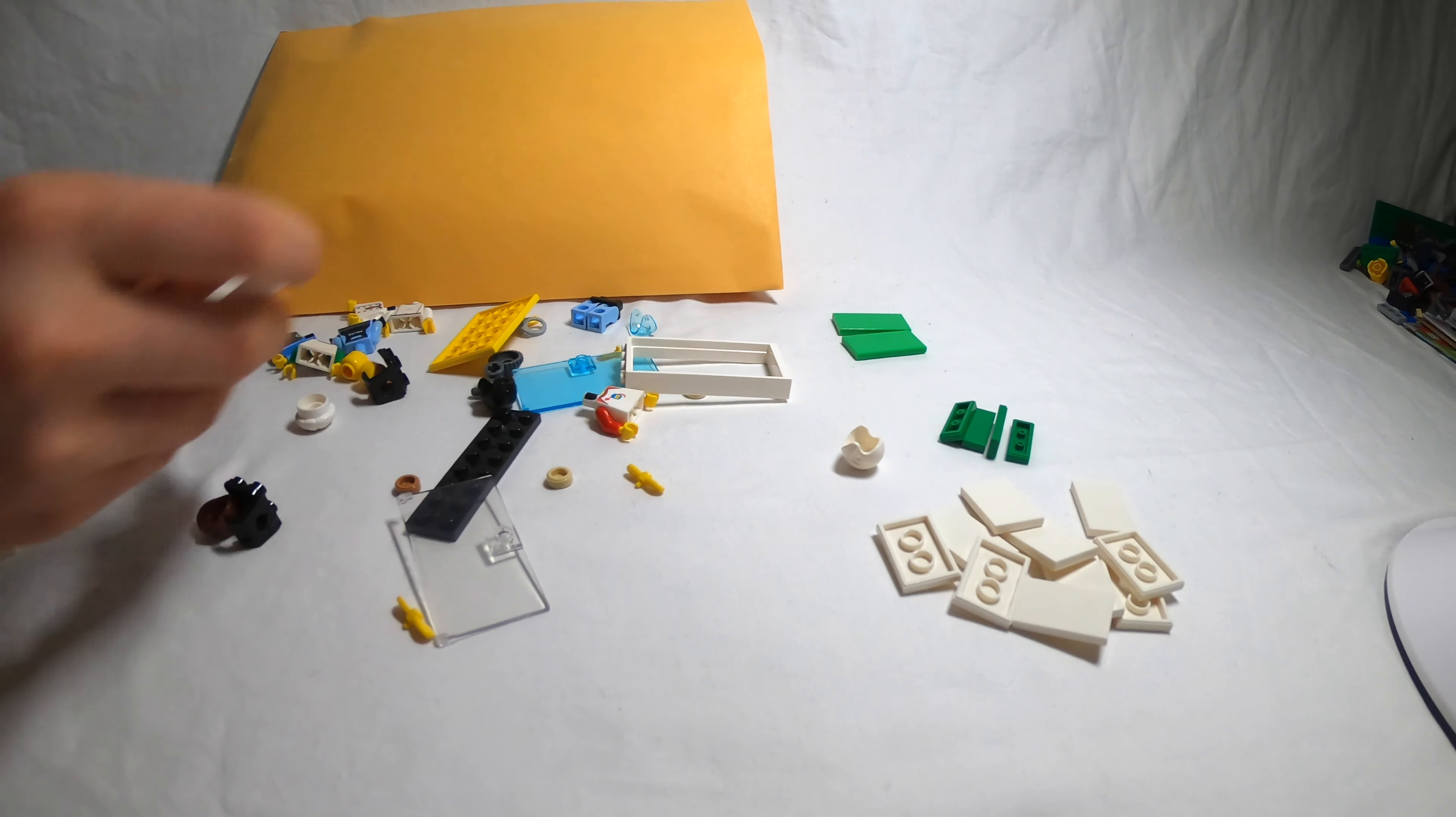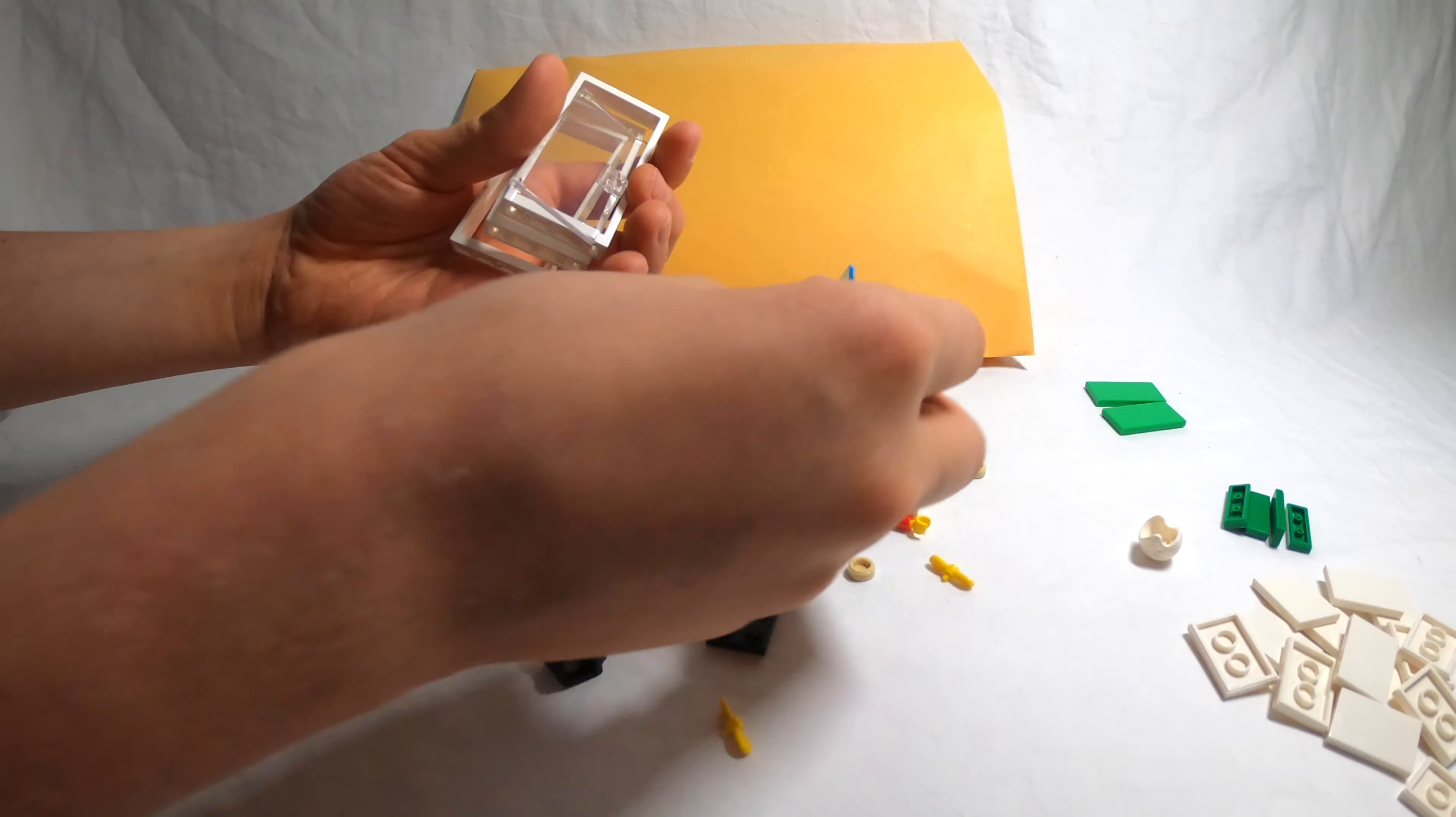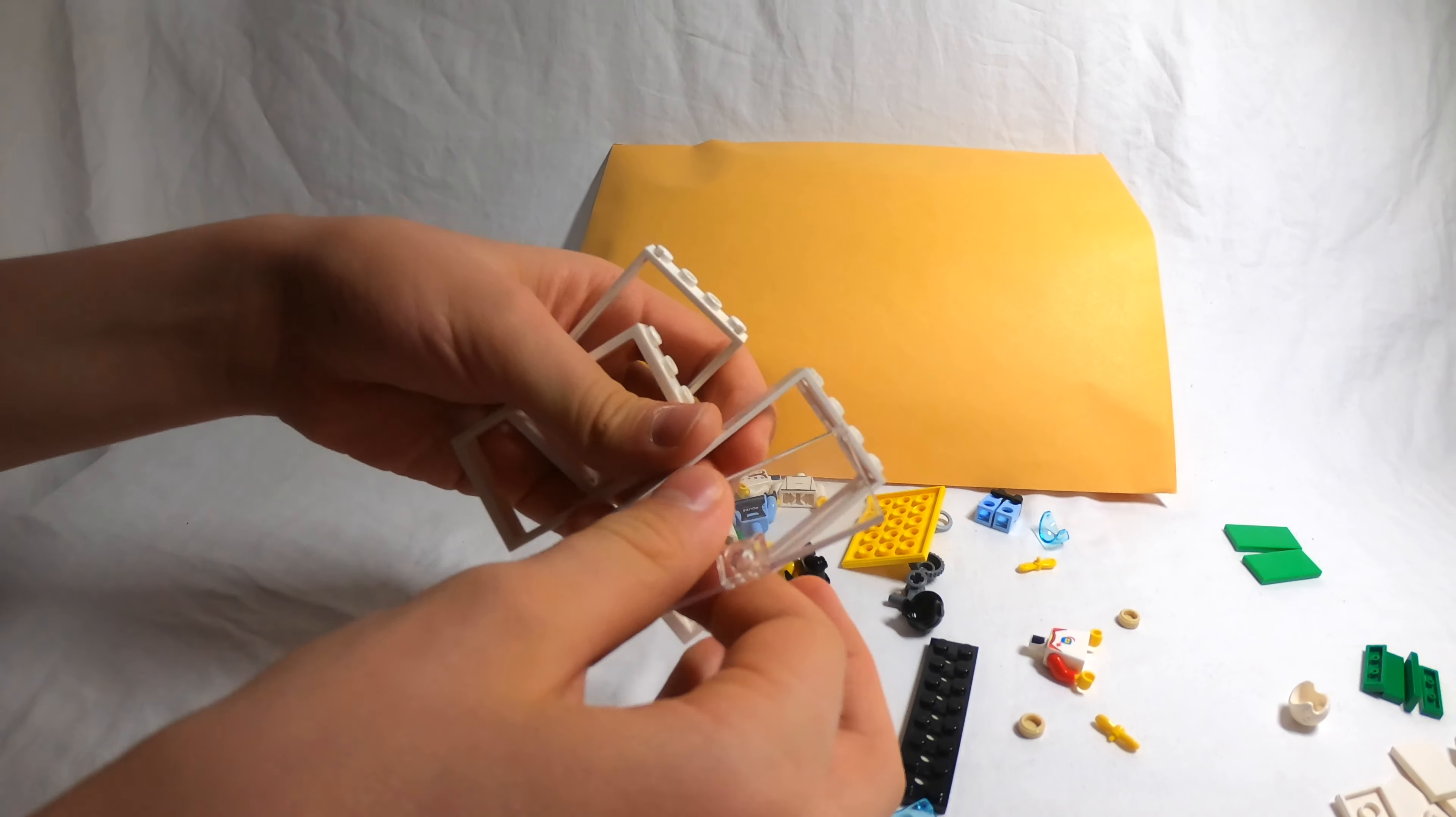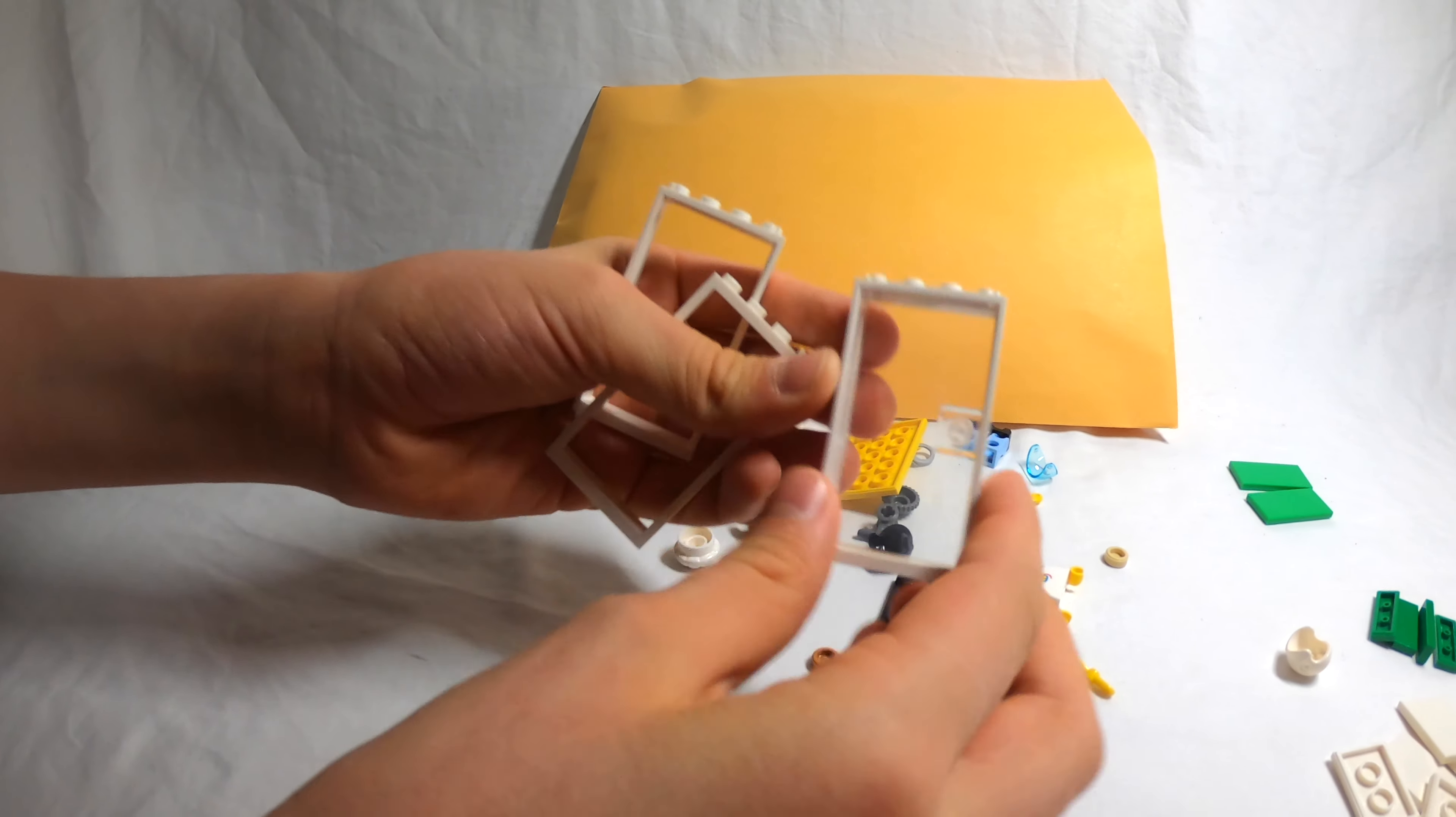Next there's these door frames which are very helpful for making doors and storefronts and stuff. So we've got three of these plus we've got two doors here. So I'll put one of the doors in the frame. And wrong side. There. Nice and good. See the door.